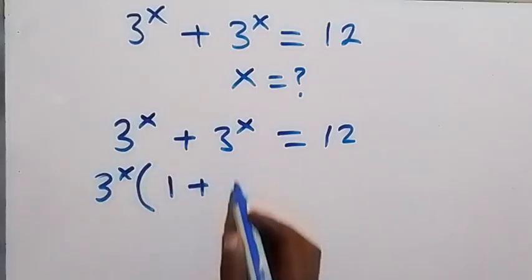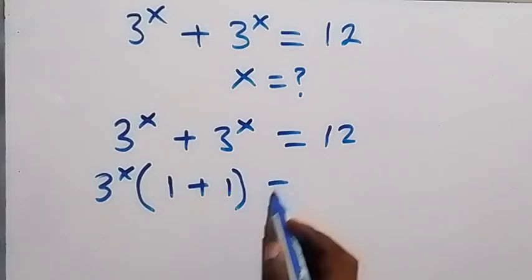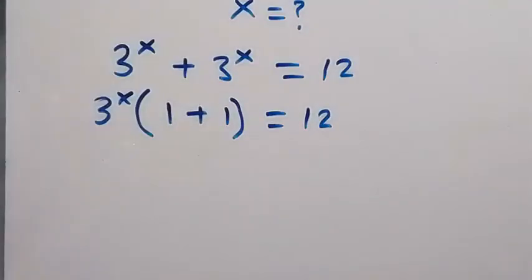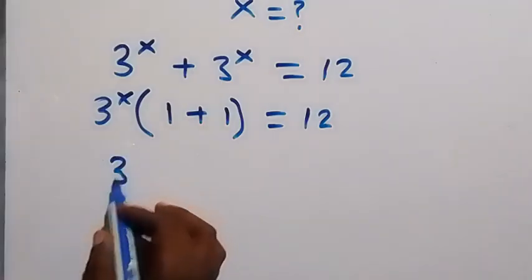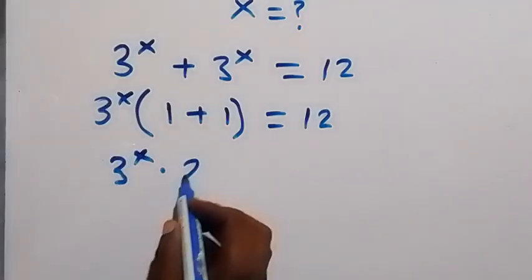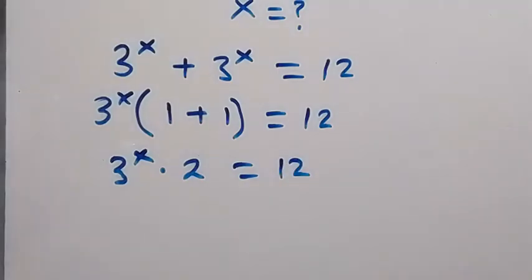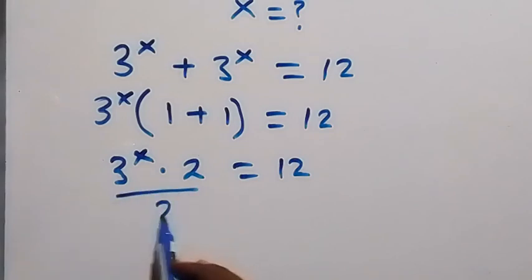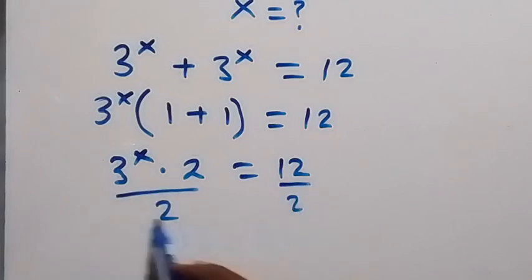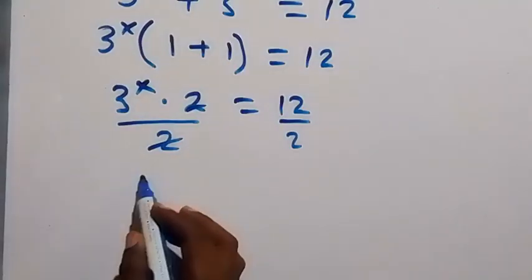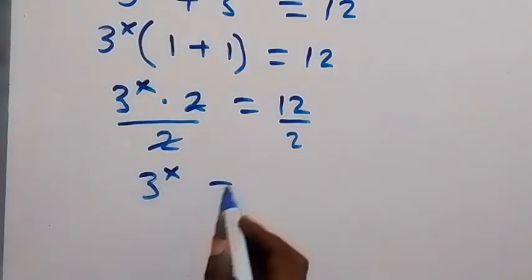Then we have 1 + 1, which of course is 2. That's 3^x times 2 equals 12. From here we can remove this 2 by dividing both sides by 2. Then 2 cancels 2, and we have 3^x = 6.